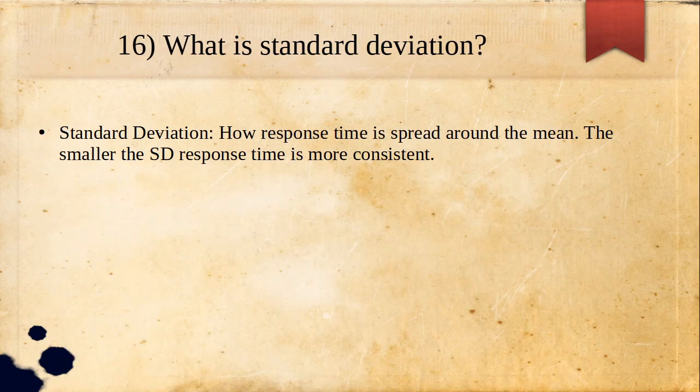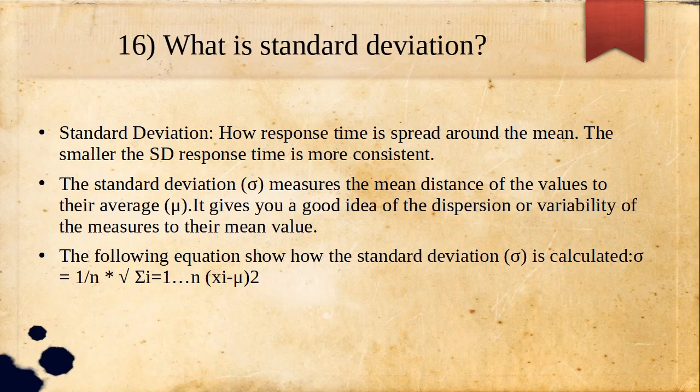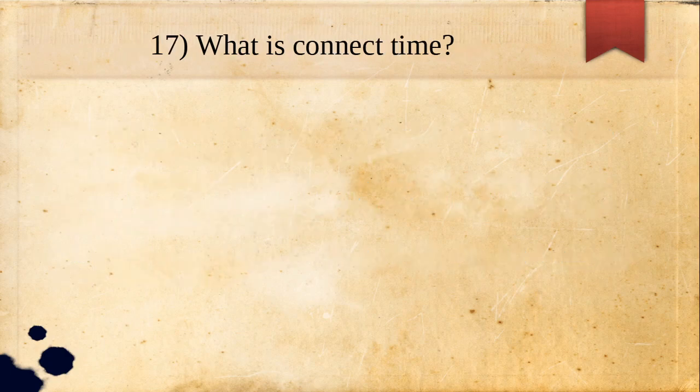What is standard deviation? Standard deviation measures how the response times are spread around the mean time. A general rule of thumb: the smaller the standard deviation, the more consistent the response time. Standard deviation measures the mean distance of the values from their average, giving you a good idea of the dispersion or variability of the measure relative to its mean value.